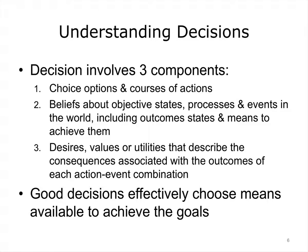Making decisions is something that every human being routinely does; some decisions have greater importance than others. The study of decision making has been a focal concern of cognitive psychology research for more than 60 years. We can characterize three components of the decision process: first, choice options and courses of action; second, beliefs about objective states, processes, and events in the world including outcome states and means to achieve them; and third, the desires, values, or utilities that describe the consequences associated with the outcomes of each action.